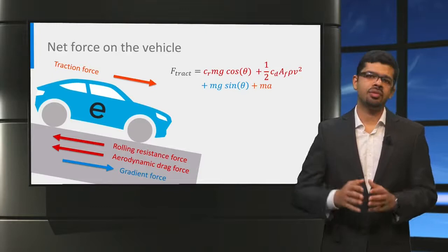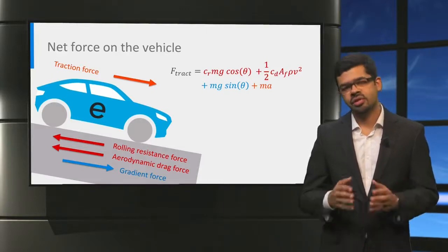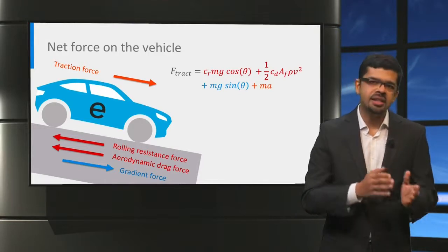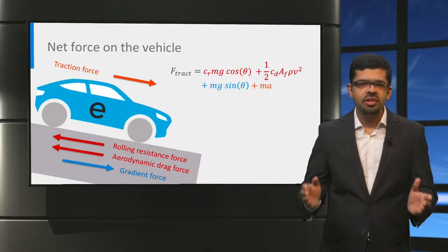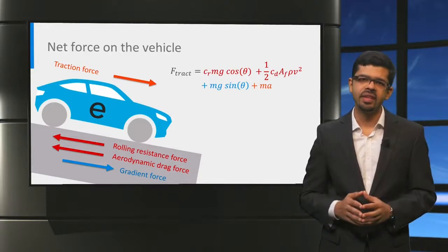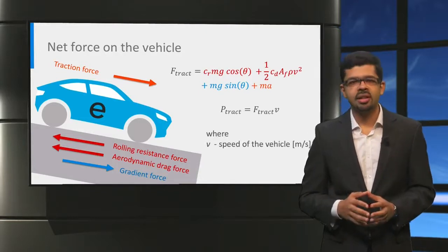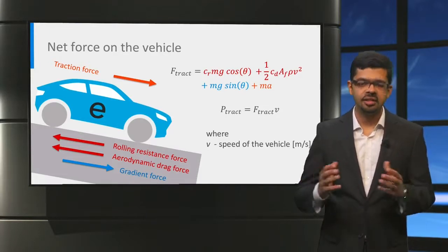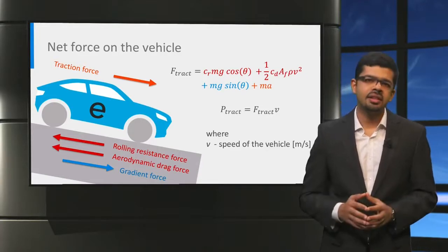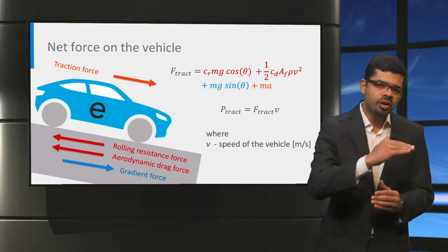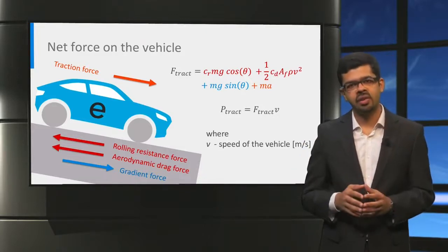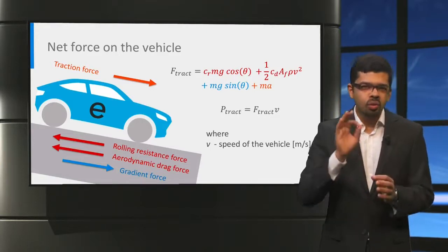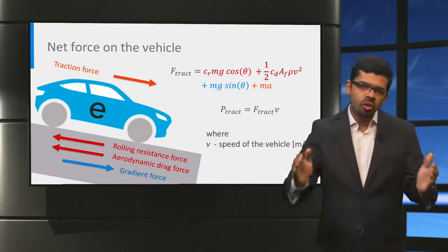If we expand the equation for the traction force, we can see the factors that influence vehicle forces. The vehicle mass and road angle affect the rolling resistance and gradient force. The vehicle speed determines the aerodynamic drag force, and the rest of the traction force determines the vehicle acceleration. To estimate the power delivered by the powertrain P_traction, we multiply the traction force F_traction by the vehicle speed V. Note that in this lecture we only consider forces in the forward and reverse direction; forces in other directions and distributed force effects are neglected for simplicity.